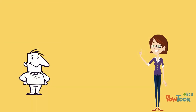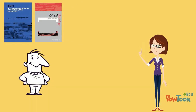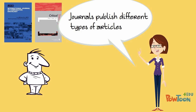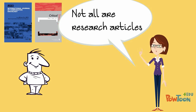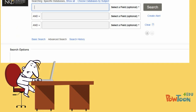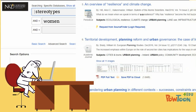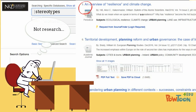Jacob's professor explained that scholarly journals publish many different types of articles, and not all of them are research articles. When he searched in a database, not all of the articles he found would be research articles.